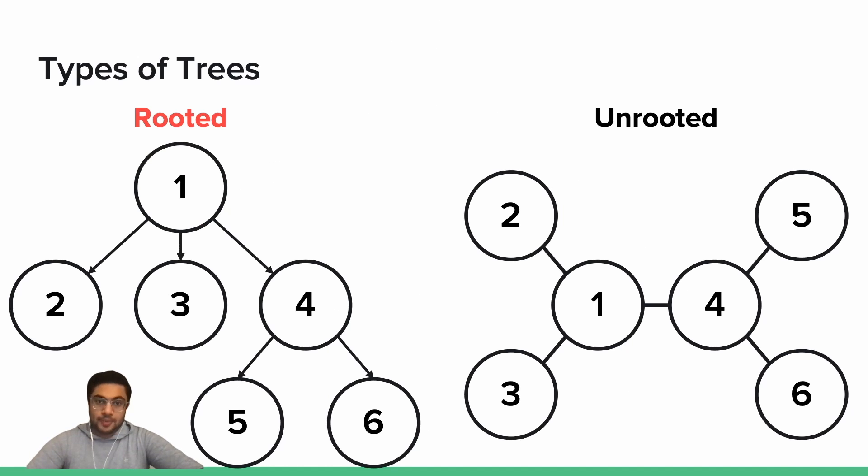In a rooted tree, a given node can have a single parent node above it and can have any number of child nodes below it. There is a single node at the top of the tree that does not have a parent, which we call the root. And there can be any number of nodes at the bottom of the tree that have no children, which we call leaves.